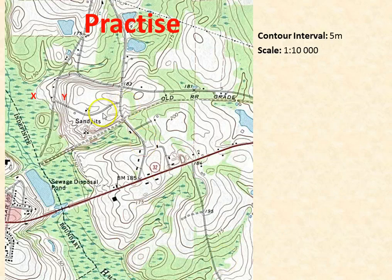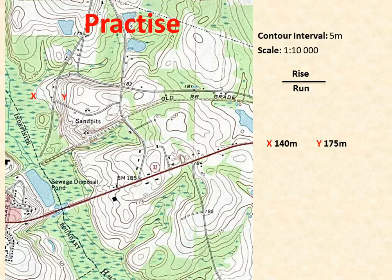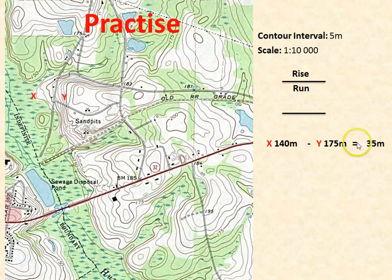Let's try it again. This time we're going to work from X to Y. The contour interval and the scale of the map have stayed the same. Rise over run. X is at 140 metres — you can go back and verify that. Y is at 175 metres. We simply subtract 140 from 175, which gives us a rise of 35 metres.